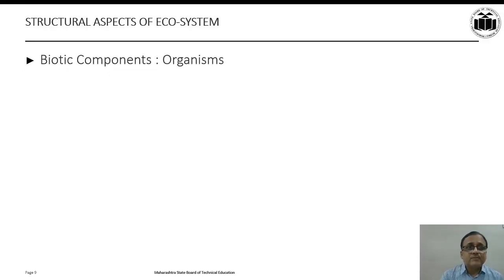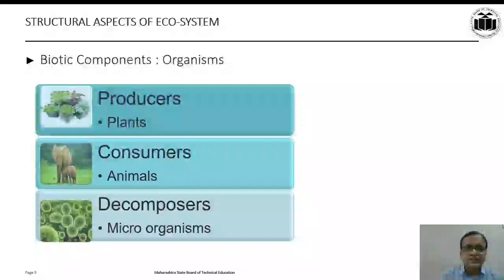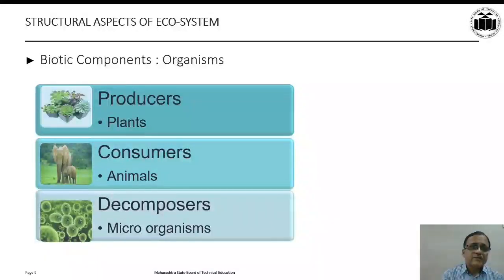The second component is biotic component which mainly comprises of different kinds of organisms. It can be divided into three components. First one is producers. The example can be given as plants. Plants prepare their own food with the help of sunlight through the process of photosynthesis. Consumers consist of all kinds of animals. Decomposers are microorganisms which consume the dead bodies of plants and animals.